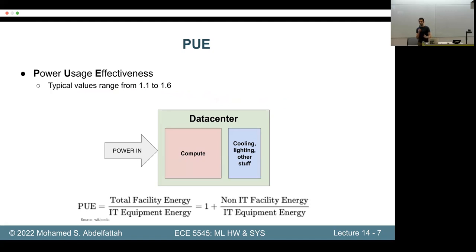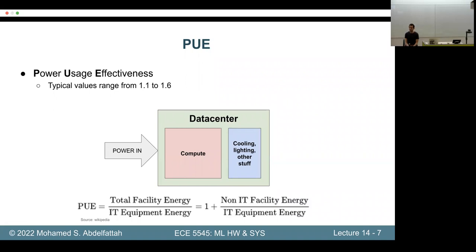PUE is a first-class concern for any company with data centers because energy consumption produces carbon in many cases — but it's also the biggest expense for running a data center. Smaller data centers will most likely have a higher PUE because overhead costs are less amortized over the space. But it's still captured by the metric — maybe building a bigger data center is the better way to go.